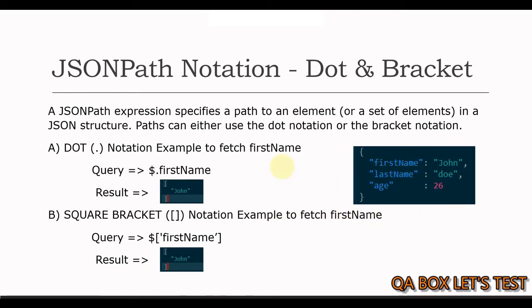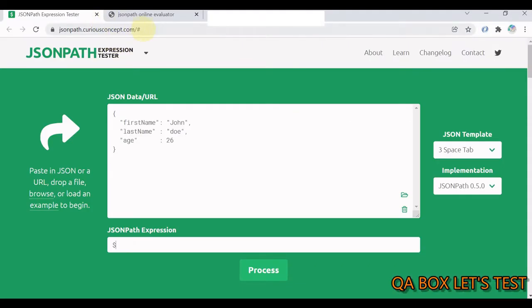Let's do a hands-on. Open the following website in the browser and mention our person dictionary in the JSON data URL section. In the JSON path expression, let's give a try to both dot and bracket notation.